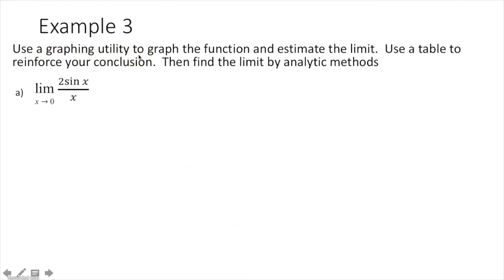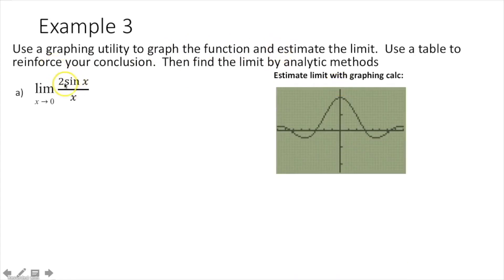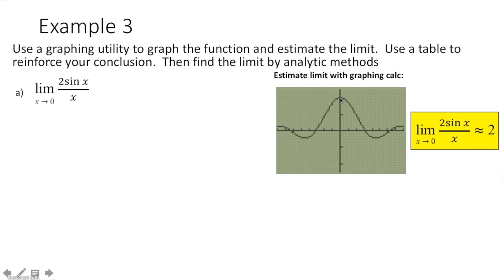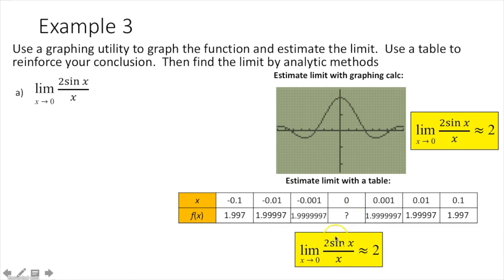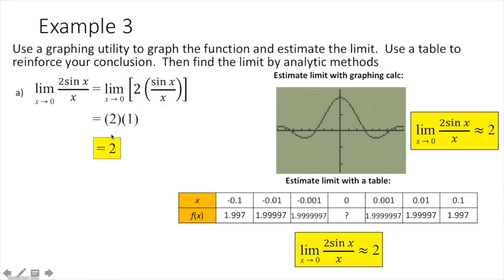Example 3 says use a graphing utility to graph the function and estimate the limit. Use a table to reinforce your conclusion, then find the limit by analytic methods. When I graph this function, as x approaches 0 from the left and from the right, it looks like it's approaching a y value of 2. The table confirms this — plugging in values near 0 gives numbers approaching 2. Using analytic methods, I take the 2 out front; the remaining expression is a special limit equal to 1, and by the scalar multiple rule, 2 times 1 gives a limit of 2.